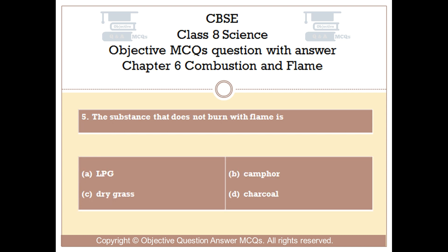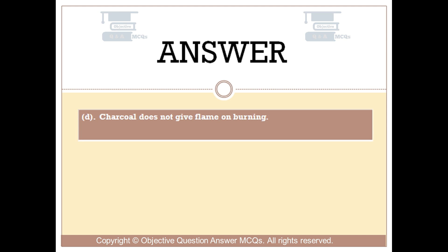Question number 5: The substance that does not burn with a flame is — Option A: LPG. Option B: camphor. Option C: dry grass. Option D: charcoal. The right answer is Option D. Charcoal does not give a flame on burning.